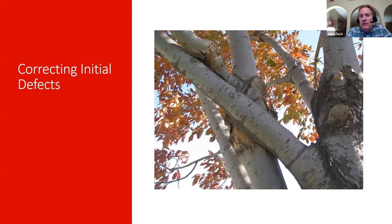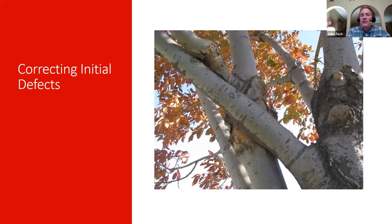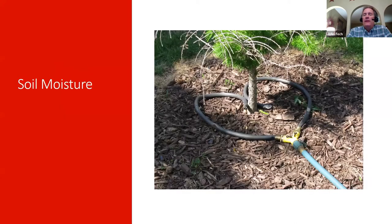Here's another problem that should have been taken care of two years earlier. Not only is there a bad branch angle, but now there's rubbing — an ongoing wound, a constant wounding of the tree. And one more iteration of the same problem where wounding has caused significant damage. These are initial structural defects that need to be taken care of early.